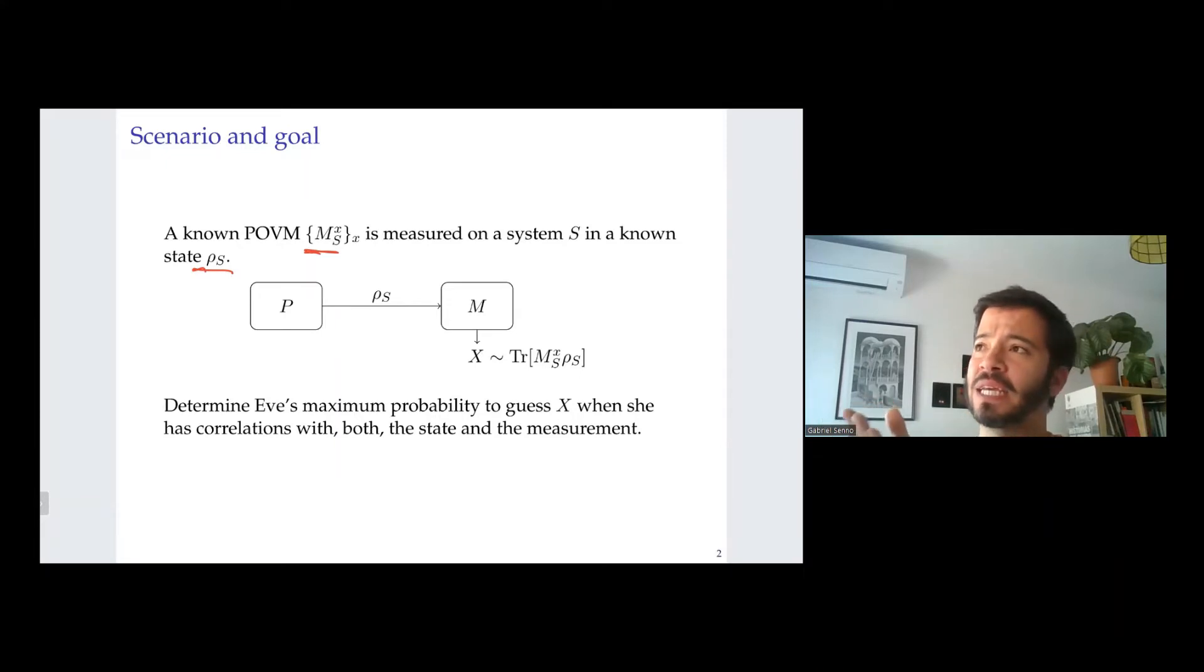And we are interested in the maximum probability with which an adversary can guess the outcome of the measurement when she has correlations not only with the state, as is what's usually considered in the literature, but also the measurement. So what we will do, we will consider two ways to model the adversaries' correlations with the state and the system, one which we call classical and the other which we call quantum, and we will compare their relative strength.